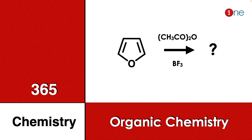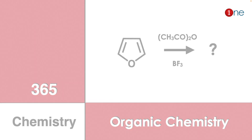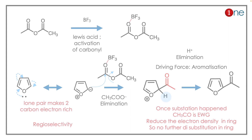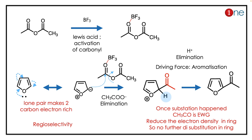Welcome to One Chemistry. This is the 365 Chemistry Series — organic chemistry questions for you. Here you have furan, acetic anhydride, and boron trifluoride. You have to find what will be the final product.